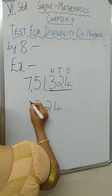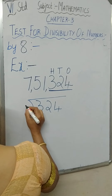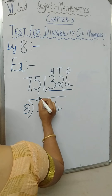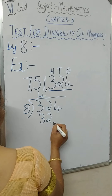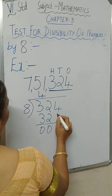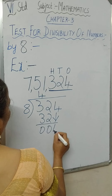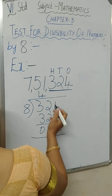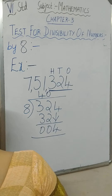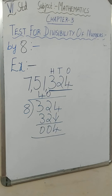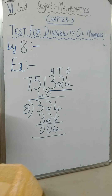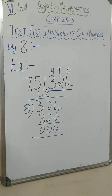Divide only these 3 numbers — 324 — by 8. 8 fours are 32, what is remaining? 0. Now take the next digit down: 4. As we cannot divide further, we add a 0, so 324 is not exactly divisible by 8. Therefore, the number 7,751,324 is not divisible by 8.